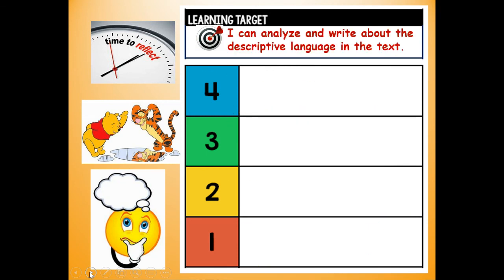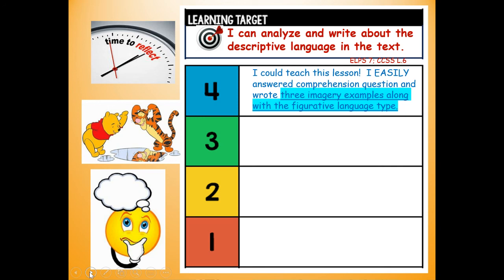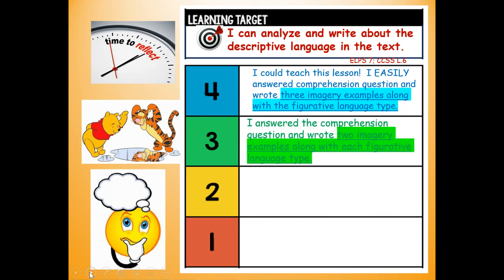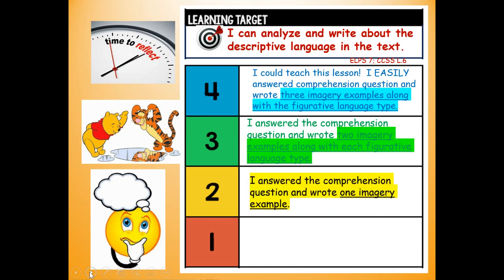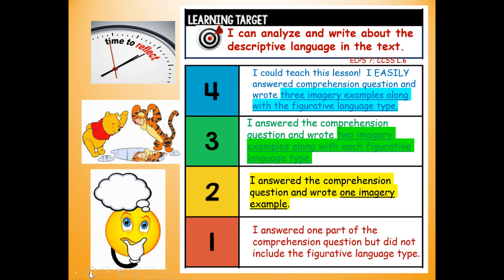At the top of your paper, time to reflect. I can analyze and write about the descriptive language in the text. If you give yourself a four: I could teach this lesson — I easily answered the comprehension question and wrote three imagery examples along with the figurative language type. A three: you answered it and gave two imagery examples with each figurative language type. A two: I answered the comprehension question with one imagery example. A one: I answered one part of the question but did not include the figurative language type. So how do you think you did — four, three, two, or one?